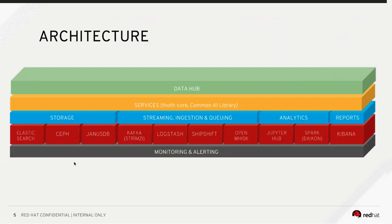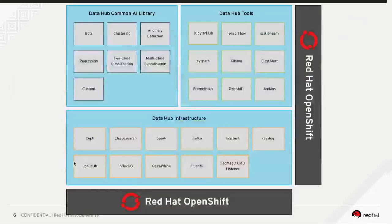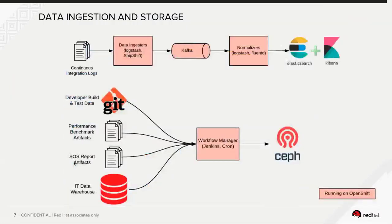All of that sits on top of monitoring and alerting. We use Prometheus and Grafana for our monitoring and alerting needs, and we also use ElastAlert. All of this is sitting on top of OpenShift, so everything can be deployed pretty rapidly in multiple environments.